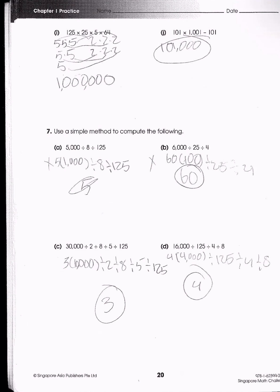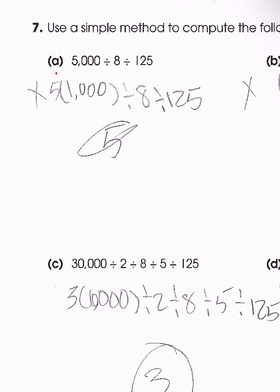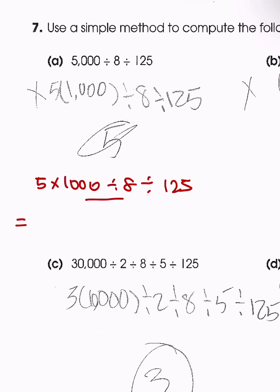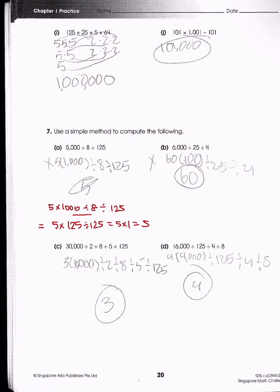For problem A: 5,000 divided by 8 divided by 125. Express 5,000 as 5 times 1,000, divide by 8, divide by 125. Since 1,000 divided by 8 is 125, we have 5 times 125 divided by 125, which equals 5 times 1 = 5. Other problems on this page are solvable using similar strategies.